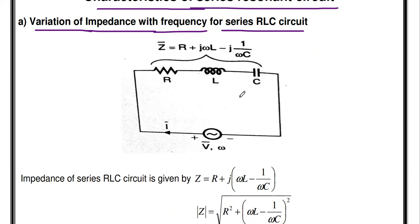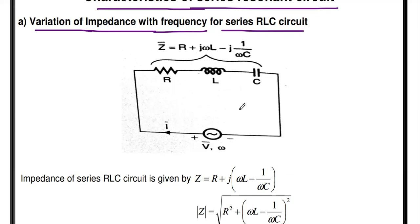The reactance of the inductor varies directly proportional to frequency, and the reactance of the capacitor varies inversely. This reactance curve was already discussed in the previous video — a link will be provided in the description box. That is why the total impedance of the series RLC circuit varies with respect to frequency, and we will now derive in which situation the impedance reaches its maximum and minimum values.